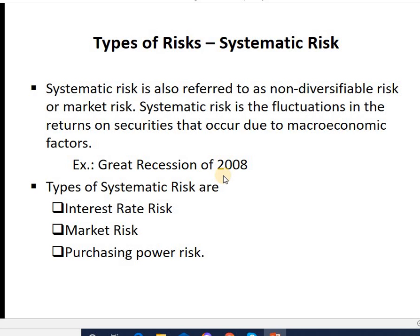An example of systematic risk is the Great Recession of 2008, where big banking industries collapsed, bringing unemployment to all countries. It was caused by the failure of housing mortgage loans due to the wrong credit policy of banks, which made big banks collapse. This led to unemployment not only in foreign countries but also in India, where many banks faced losses and many people lost their jobs — operating on a macro level.